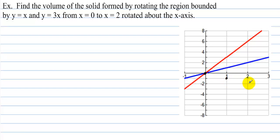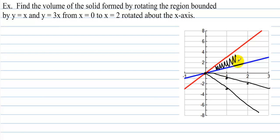Let's get the reflection of these two graphs: over 1, down 1, over 1, down 1 — there's the line — and then down 3 over 1. Now we rotate the area between these two lines: we rotate the inner one around, and then rotate the top one around, and what you end up with is this washer effect.